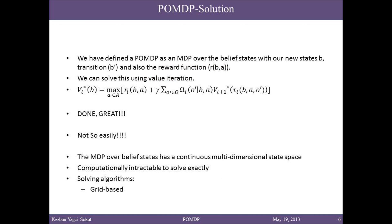We have formed a new MDP using belief states. We can apply value iteration to this and solve the optimality equation. The optimal policy yields the highest expected reward value for each belief state, represented by the optimal value function V star. However, there is a deal breaker: belief states are continuous over the interval [0,1], and since we have a multi-dimensional state space, it's basically a burden of computation.